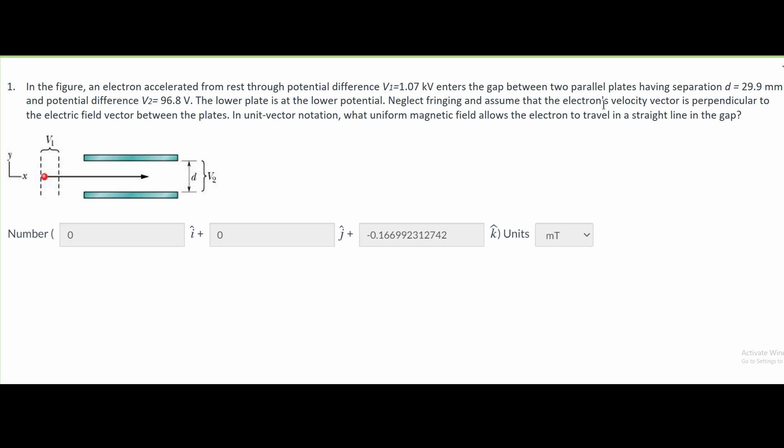The plates have separation d equal to 29.9 millimeters and potential difference V2 equal to 96.8 volts.